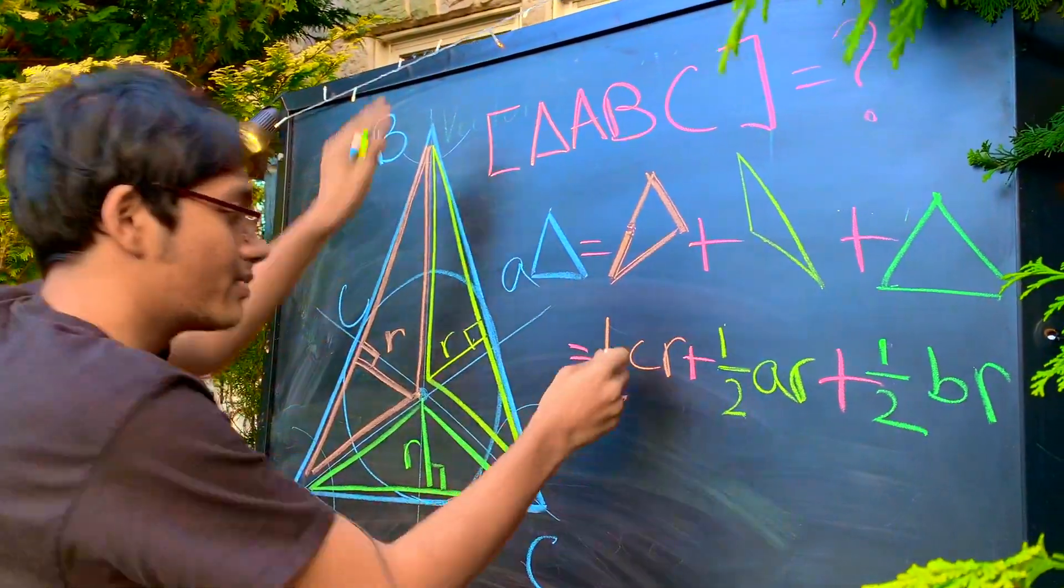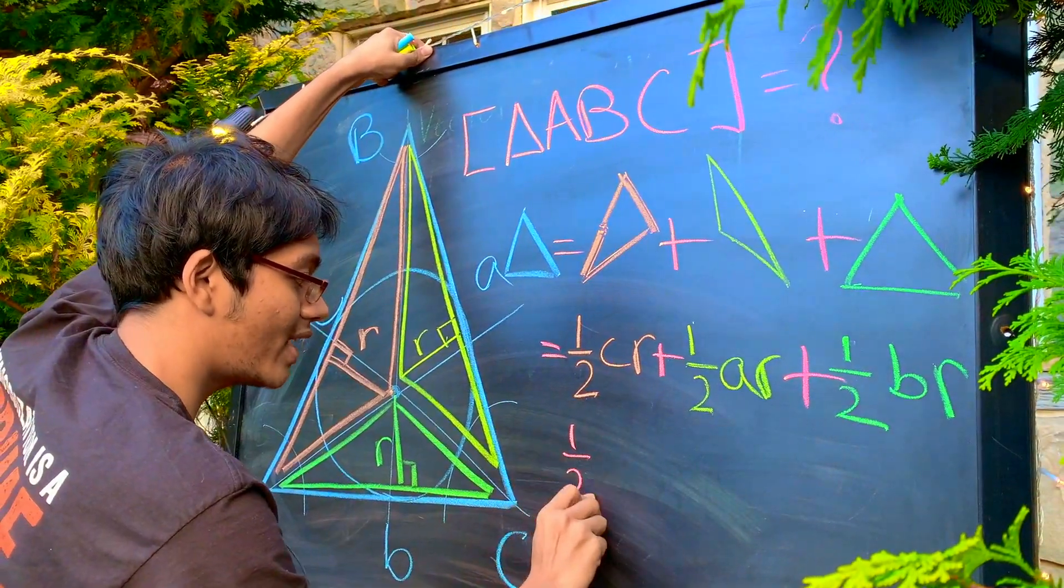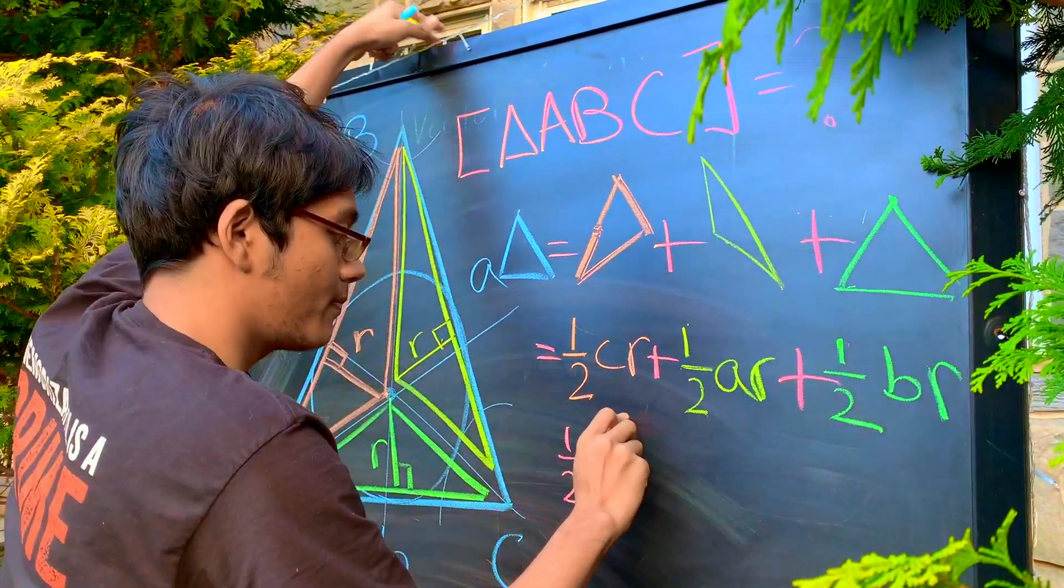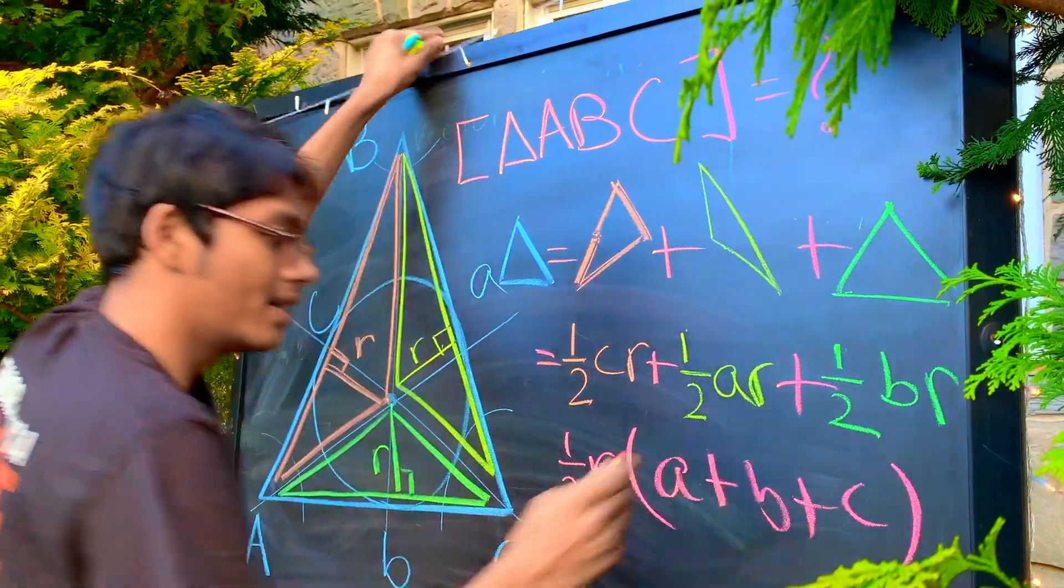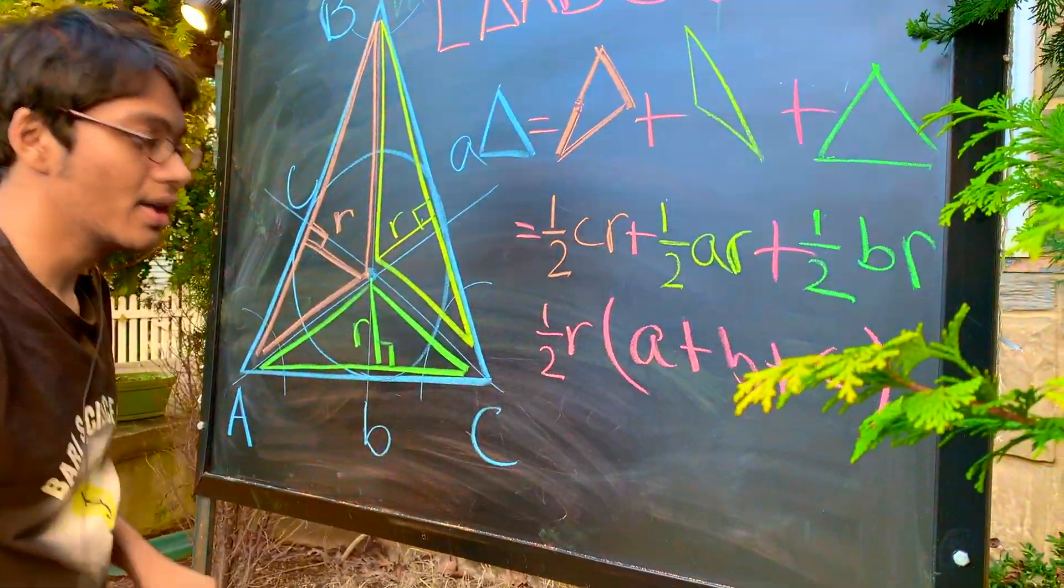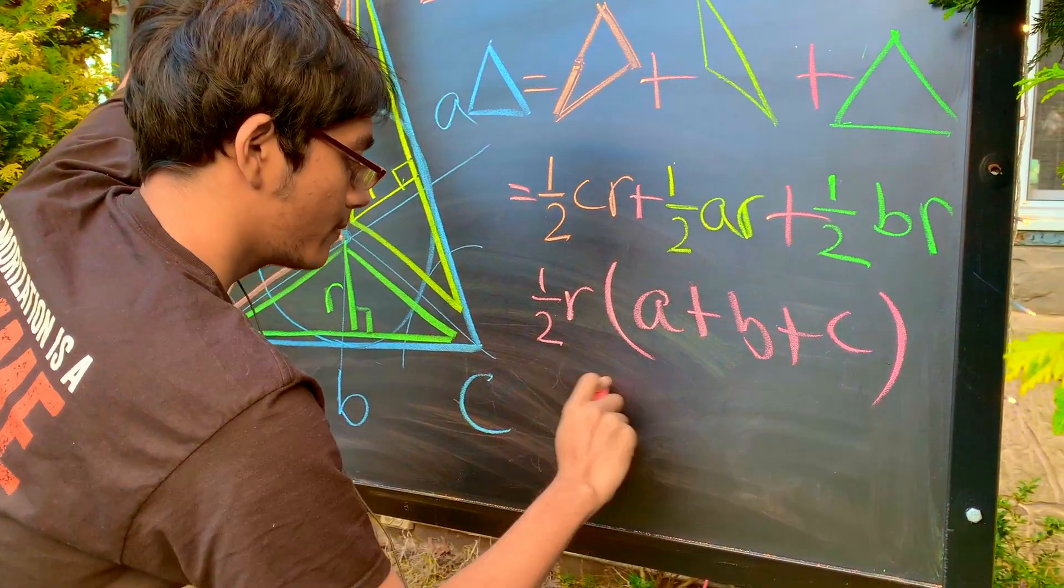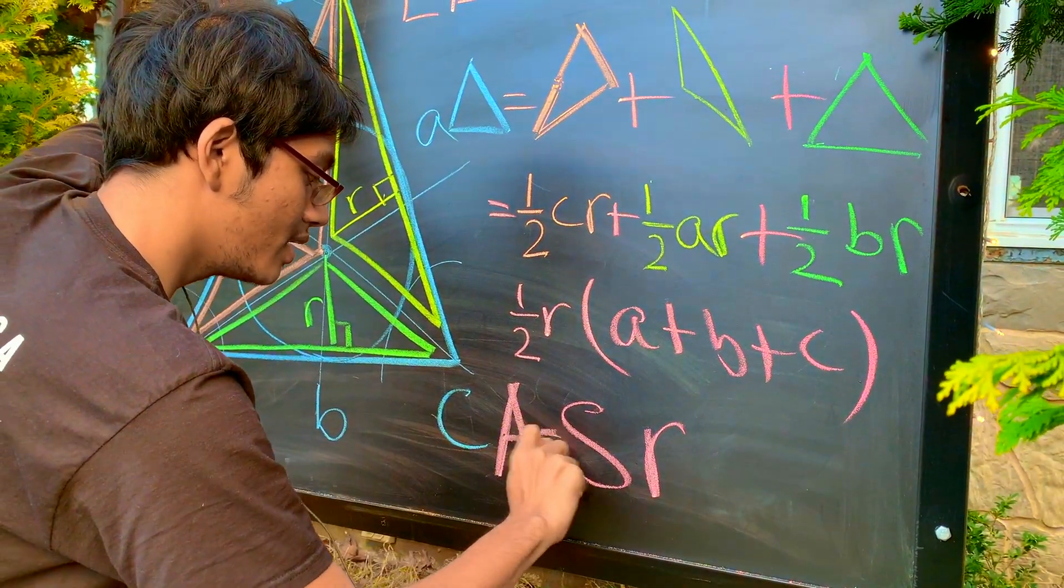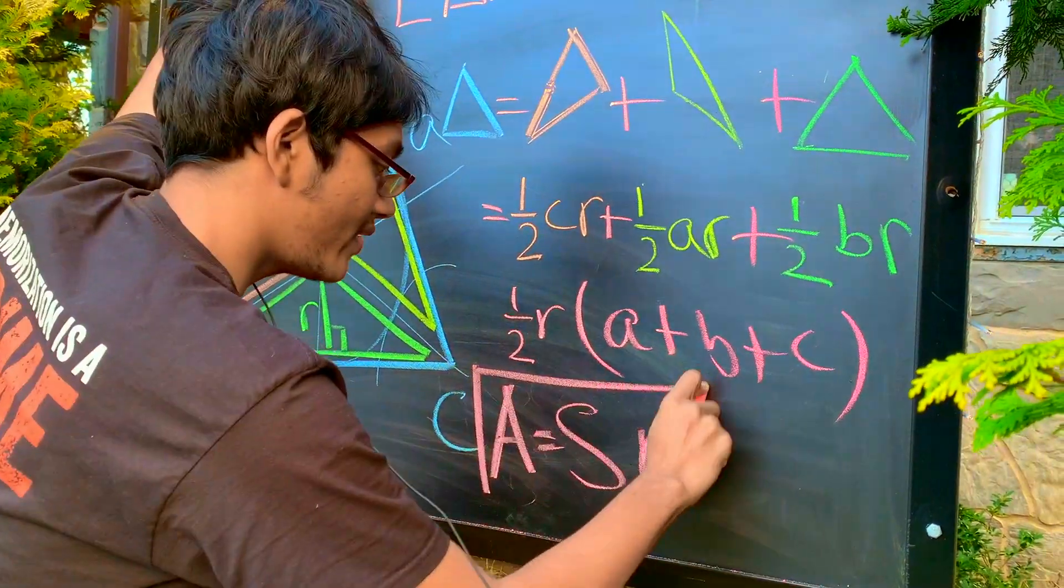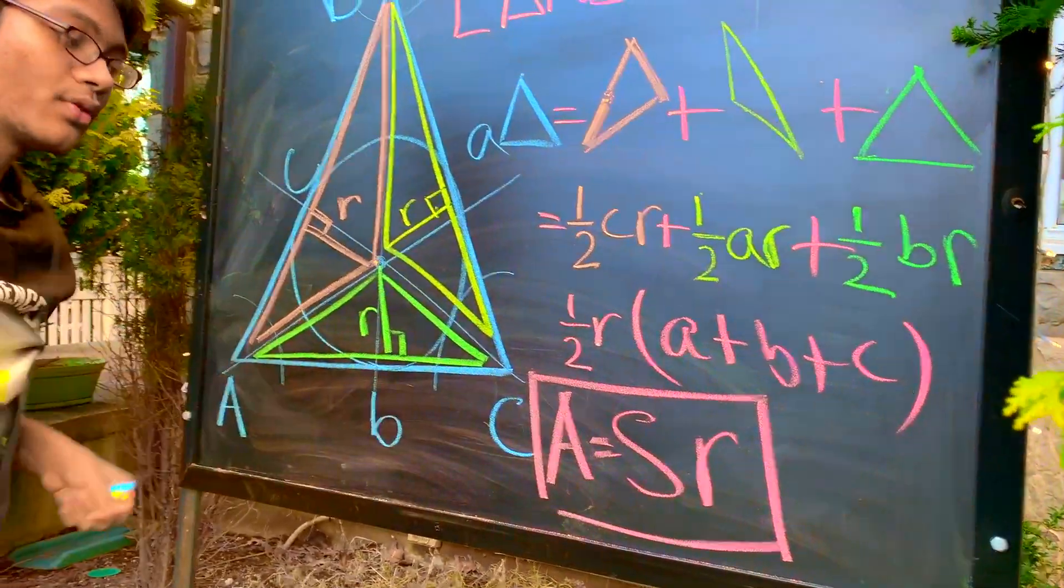Well, now, do you see something? I can factor out something. I can factor out half of R. And in the parentheses, I'll be left with A plus B plus C. Well, what's half of the perimeter? Well, that's just the semi-perimeter. And R. And so the area of our triangle is given by A equals SR.